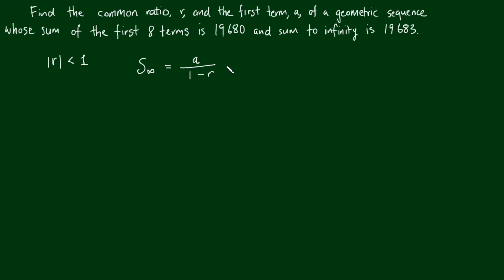Now the formula for the first n terms, s sub n, is given by a times one minus r to the power of n all over one minus r.